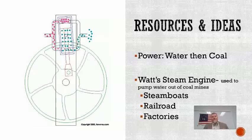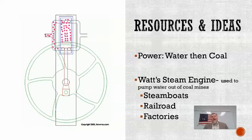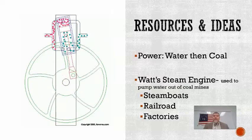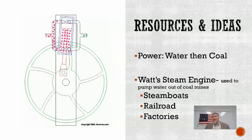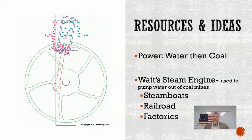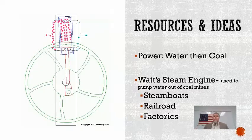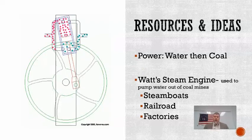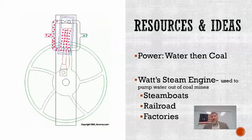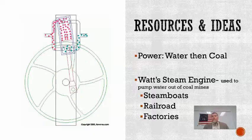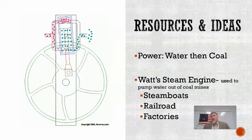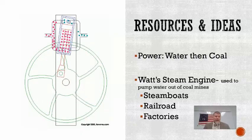You've got to have power — whether it's water power from rivers or coal power for steam engines. You also need the ideas, for example Watt's steam engine. The original use of Watt's steam engine was actually to pump water out of coal mines so they could get to the coal more easily. Additional ideas that came about include steamboats and railroads, and ultimately coal was used to power factories as well.